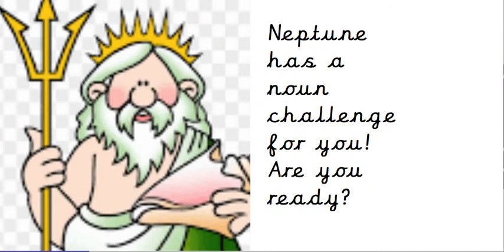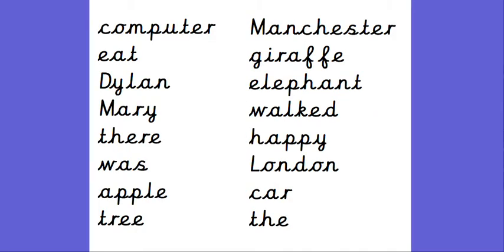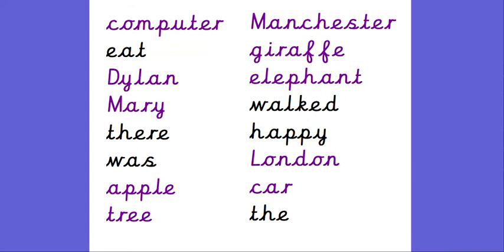Neptune is very impressed with everybody today, so he has a noun challenge for you. A noun is a naming word — person, animal, place or thing. Are you ready? Take a look at these words on the board and see if you can find out which ones are nouns: the name of a person, the name of an animal, the name of a place, or the name of a thing. Welcome back — did you spot them all? The first noun on the board is the word computer — 'a computer', that is the name of a thing, the name of an object. The next two nouns are Dylan and Mary — both start with a capital letter, they are the names of people, proper nouns. They must be the name of somebody real. Well done if you got those.